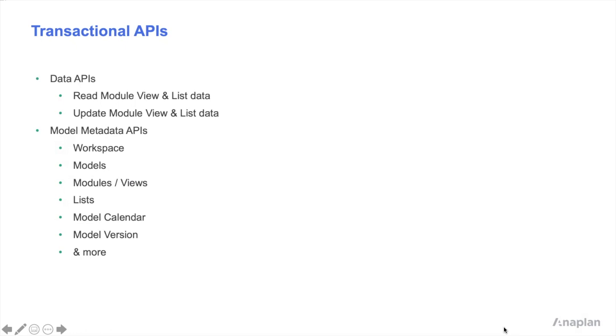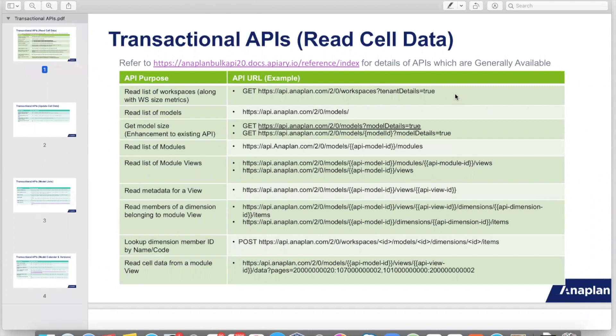Let us now look at a brief summary of the APIs available till now. These slides show all the Transactional APIs that are available to our customers and partners as of May 2021. We have APIs to read cell data without using export actions as well as certain associated Model Metadata APIs. Let us look at some of them.